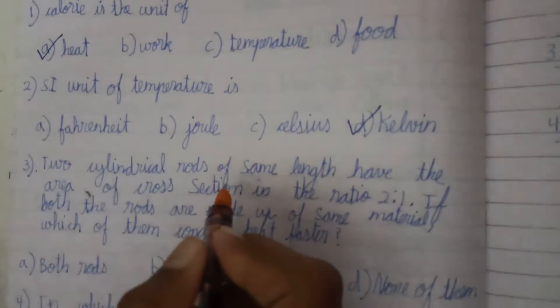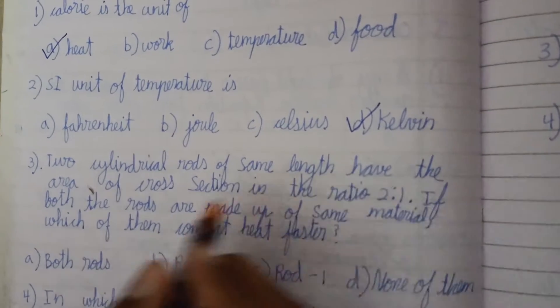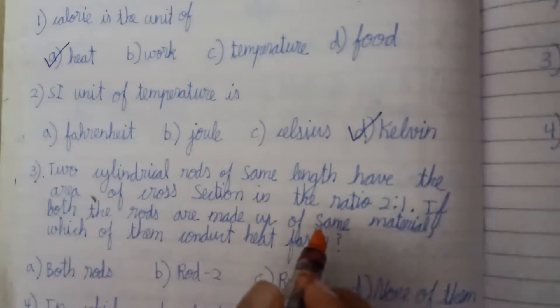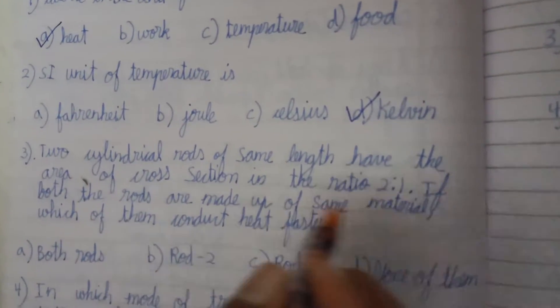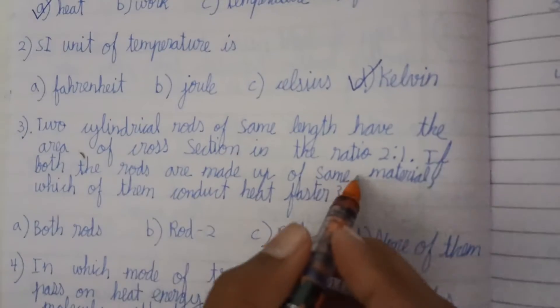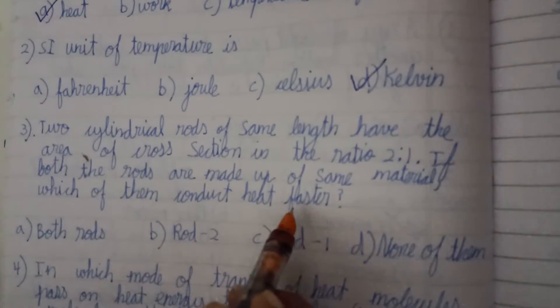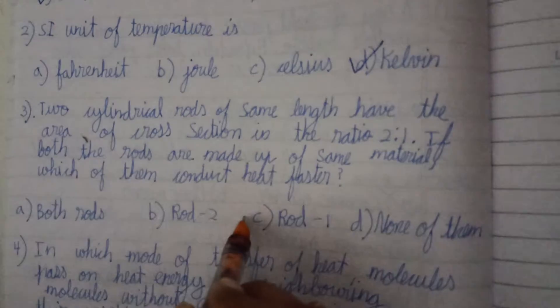Two cylindrical rods of same length have the area of cross section in the ratio 2 is to 1. If both the rods are made up of same material, which of them conduct heat faster? Rod 1.